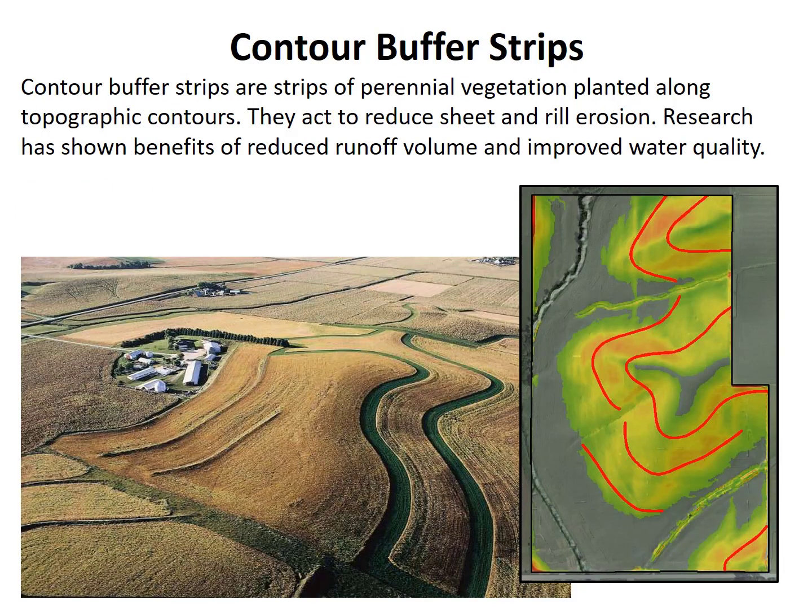Contour buffer strips are another practice that could be cited using the ACPF toolbox. These are strips of grassy vegetation placed in sloping fields along the topographic contour to intercept sheet and rill runoff that occur above areas of concentrated flow. The spacing between the strips can be adjusted according to slope to closely match NRCS design specifications.